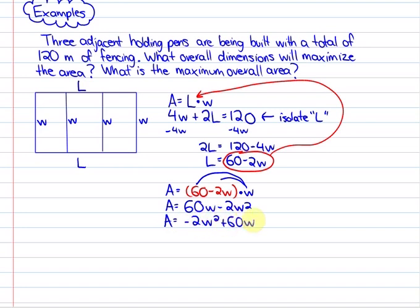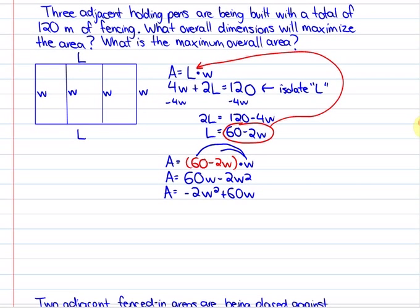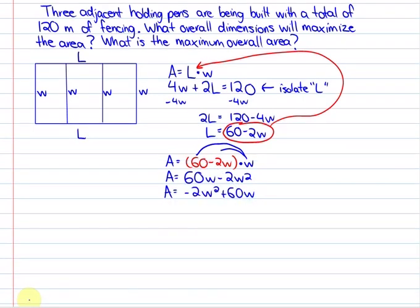Now that's our quadratic function that represents the relationship between area and width. To discover a maximum area or a maximum dimension for that area, what we need to do is know where the vertex of this particular problem lies. And in order to find the vertex we need to complete the square.